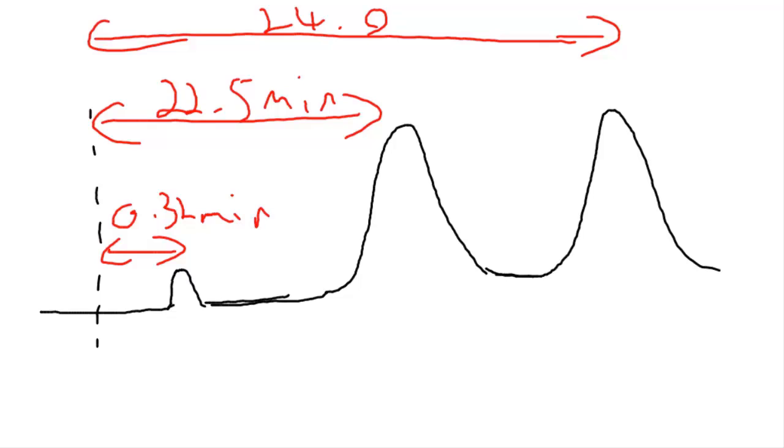And we also have our peak width, so we're imagining these as triangles, so we draw tangents along the edge of the peaks, so the base peak width for the first peak is 0.82 cm.